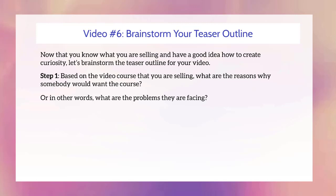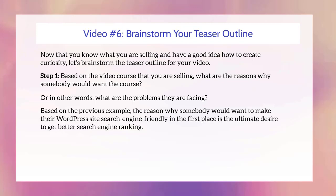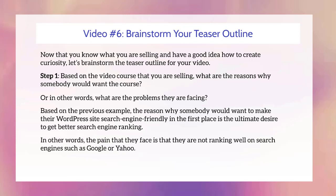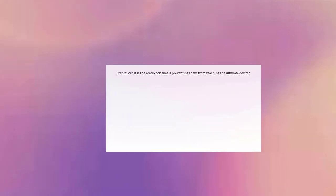Step number one: based on the video course you're selling, what are the reasons why somebody would want the video course — or in other words, what are the problems they are facing? Write that down. In the WordPress example, the reason somebody would want to make their WordPress site search-engine friendly is the ultimate desire for better search engine rankings. The pain they face is not ranking well in search engines, not getting free traffic from Google, Yahoo, Bing, or other search engines. Pause this video and jot down the ultimate desire for the video course you are selling.